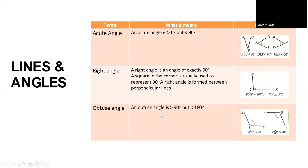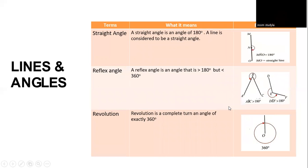An obtuse angle is greater than 90 degrees but less than 180 degrees. A straight angle is an angle of 180 degrees — a line is considered to be a straight angle; for example, angle MNO equals 180 degrees, so M to O is a straight line. A reflex angle is greater than 180 degrees but less than 360 degrees. A revolution is a complete turn — an angle of exactly 360 degrees.